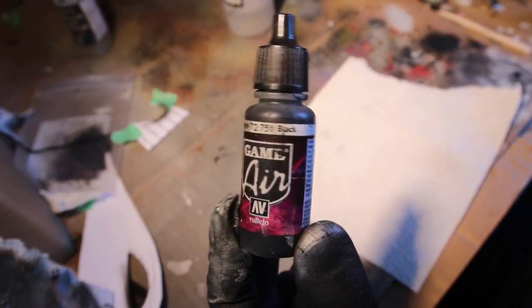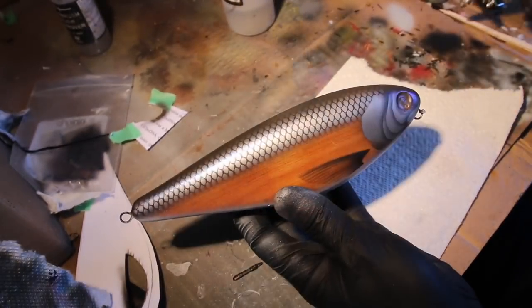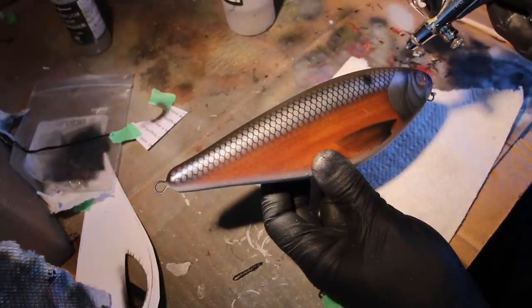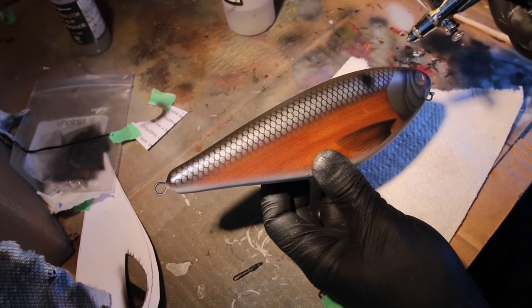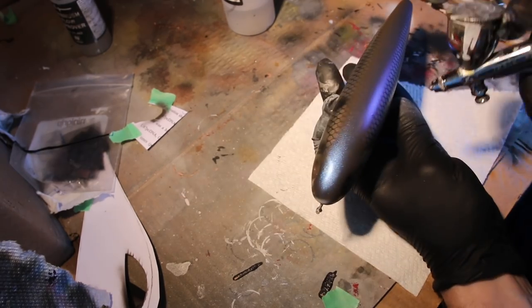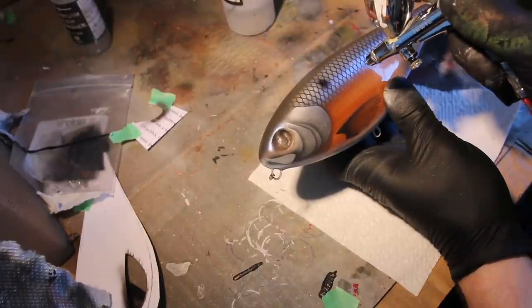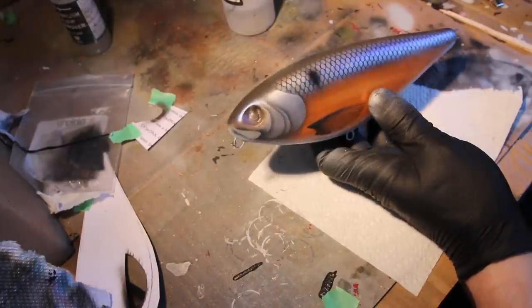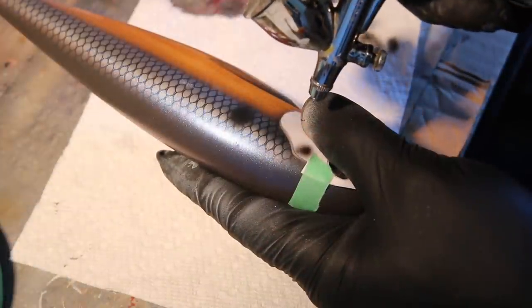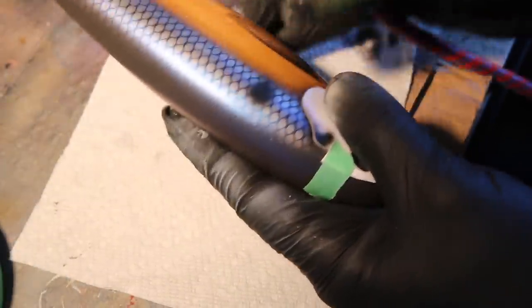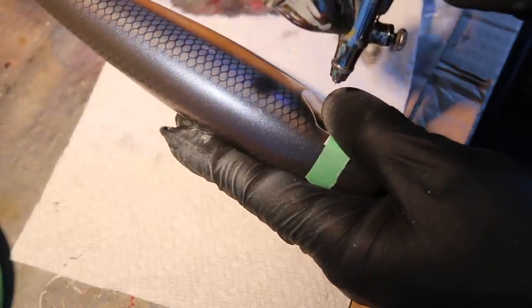My customer who wanted me to paint this topwater bait wanted to have a threadfin shad theme on his bait, so we're going to add one of those shad spots on the side of this lure now. I'm still going to continue with that black and I'm going to do a little bit of shading now to the gill plates to make them pop out a little bit more.